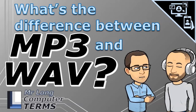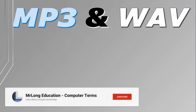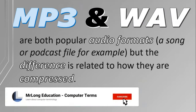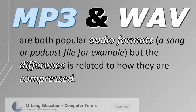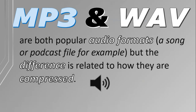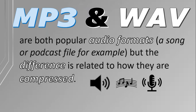What is the difference between MP3 files and WAV files? MP3 and WAV files are commonly associated with audio formats — they are files that you play in order to hear the audio of a song or a podcast discussion. MP3 and WAV files are the most popular formats, but they are quite different, and the difference is related to how the files are compressed.